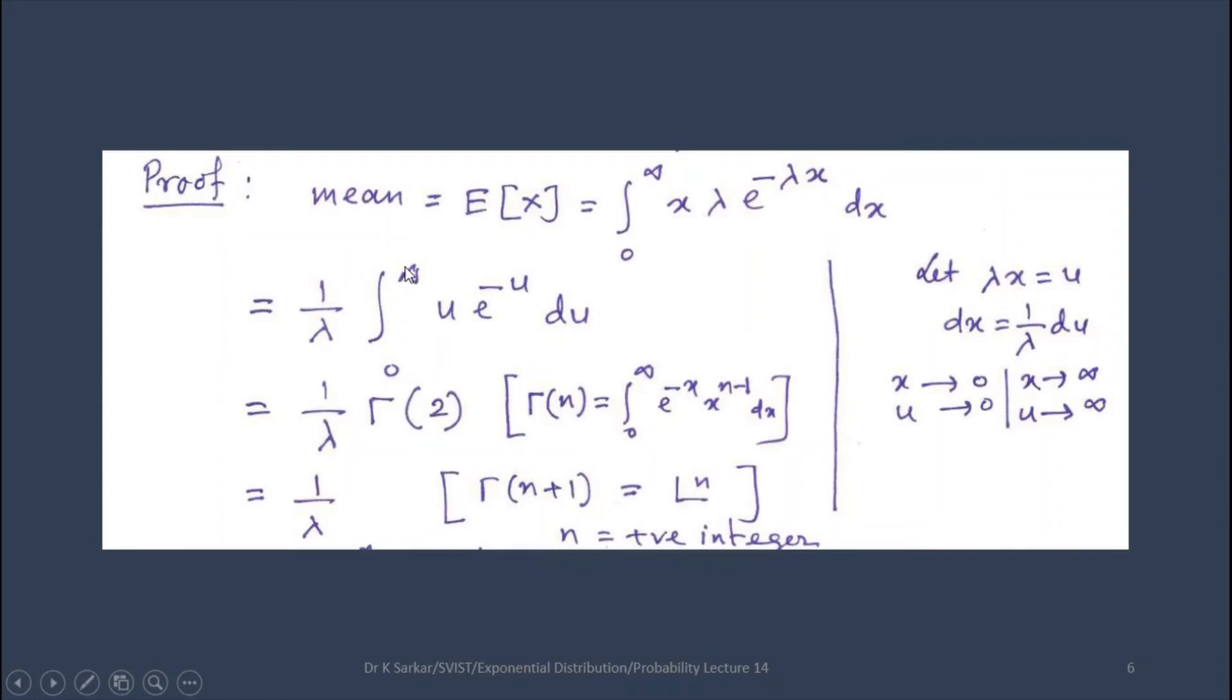The limits remain the same. Now, this integration 0 to infinity u e power minus u du is a gamma function. Gamma n equals integral 0 to infinity e power minus x times x power n minus 1 dx. If we take n as 2, we get this integration.